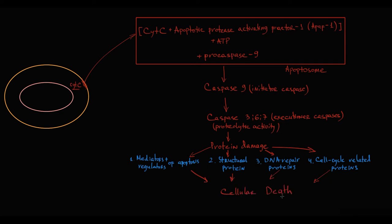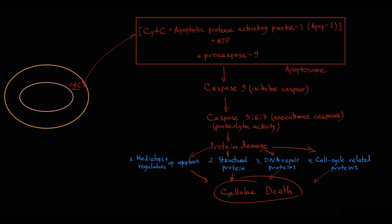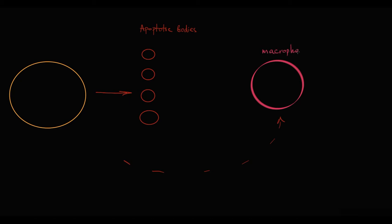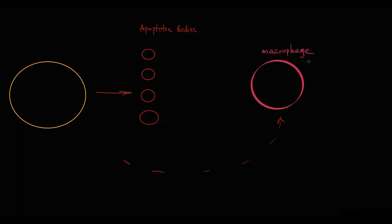When caspases destroy the inner content of the cell, cellular death becomes inevitable and the cell disassembles itself into multiple small particles called apoptotic bodies. The cell also gives signals to macrophages and neighboring cells with phagocytic activity to eliminate them. At the final stage of apoptosis, when cell content is packed into apoptotic bodies, the cell gives a sort of 'come and eat me' signal to macrophages.